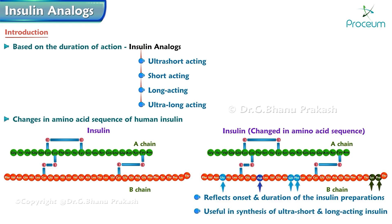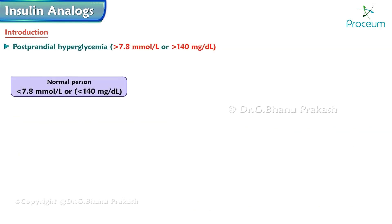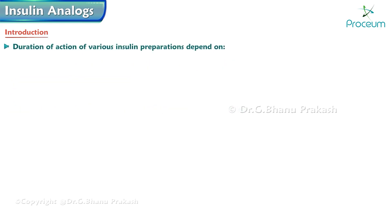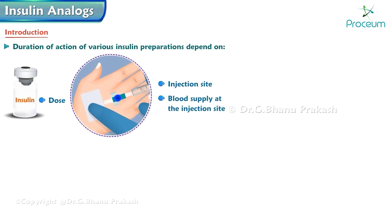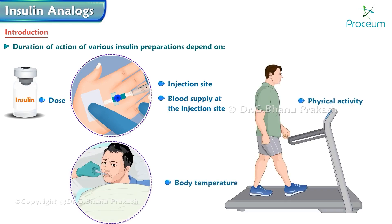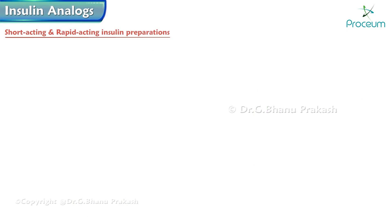These changes are useful in synthesis of ultra short-acting and long-acting insulin. Postprandial hyperglycemia is managed by short and ultra short-acting insulin, whereas long and ultra long-acting insulin are used for maintenance of glucose levels. Duration of action depends on dose, injection site, blood supply at the injection site, body temperature, and physical activity.